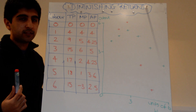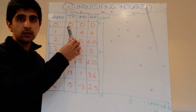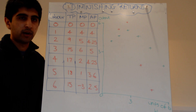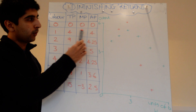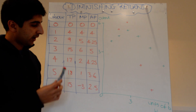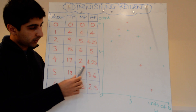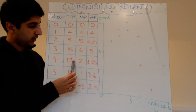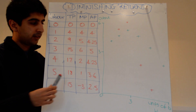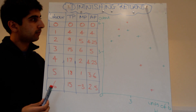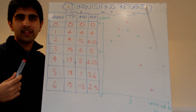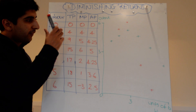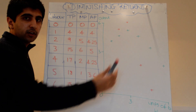The average product is simply the total divided by the number of workers — how much on average each worker brought in. For example, the first worker: four divided by one equals four. Four workers: seventeen divided by four equals 4.25 units. That's how you work out the average product — it simply means average output. Using these figures, let's plot curves.